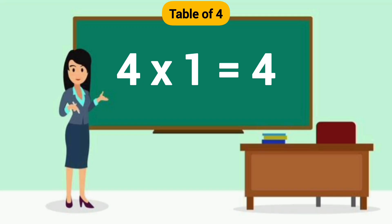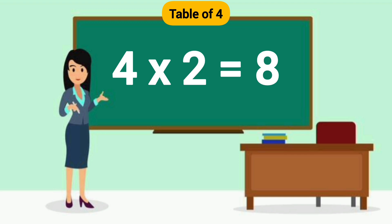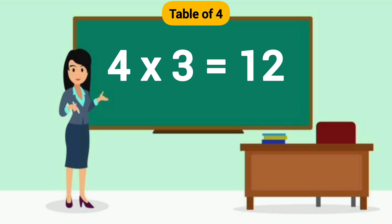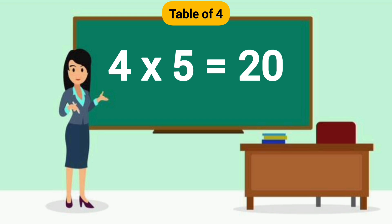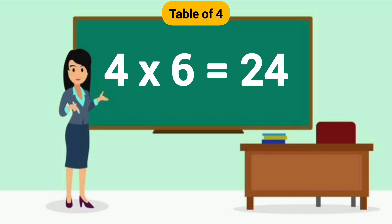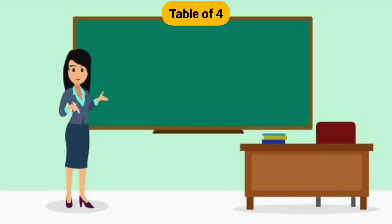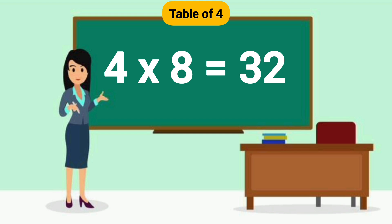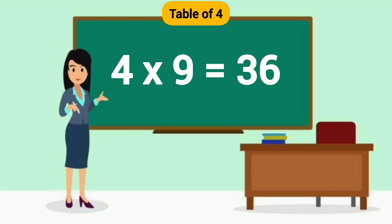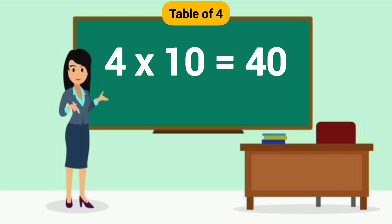Table of 4: 4×1=4, 4×2=8, 4×3=12, 4×4=16, 4×5=20, 4×6=24, 4×7=28, 4×8=32, 4×9=36, 4×10=40.